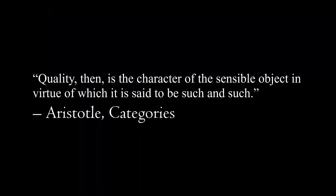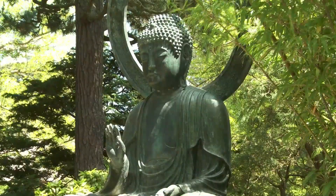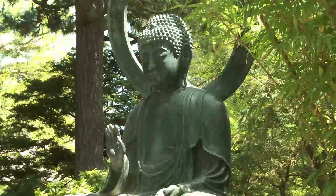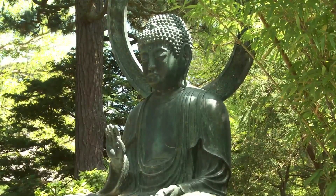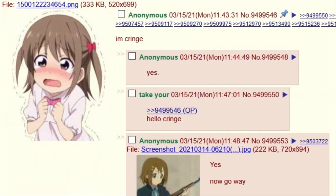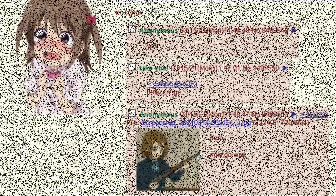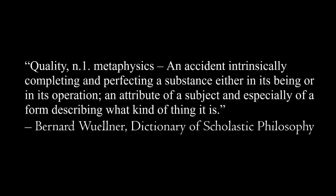Quality is the character of the sensible object in virtue of which it is said to be such and such. Quality encompasses all distinguishing attributes such as colour, texture, shape, electromagnetic properties or similar properties or accidents that an entity has which cannot be reduced to the other categories. Quality corresponds to universals and to form, especially to morphe or material form, which is the province of Aristotle's treatment of form.